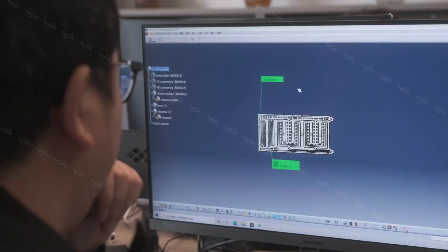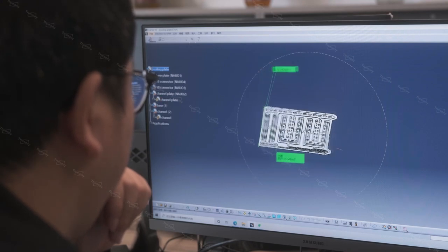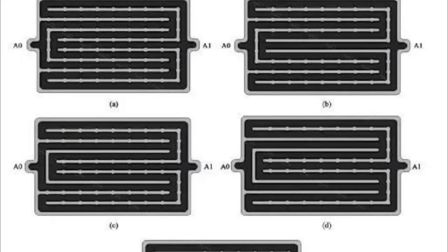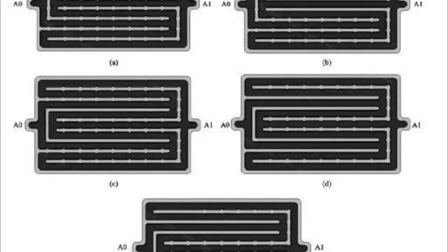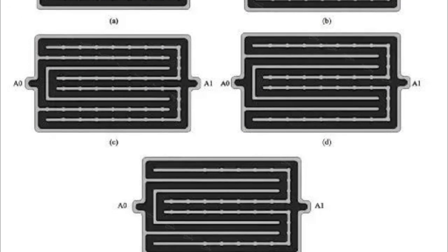In general, the heating power of the battery when discharging is greater than the heating power when charging. Therefore, it is sufficient to test the thermal power of the battery module at the 1C discharge rate.